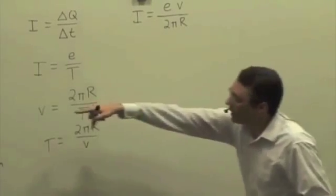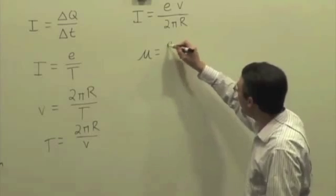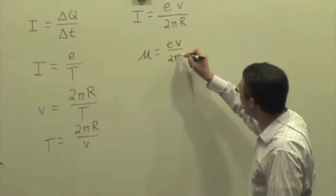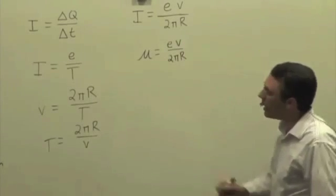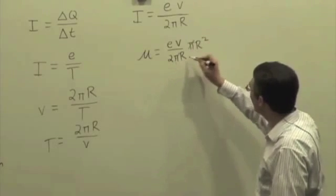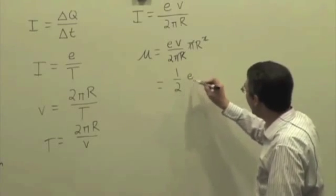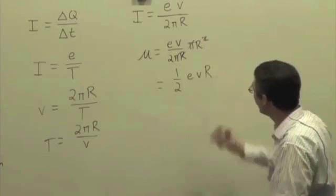And then I can plug that back into our equation for mu. So I have the current, which is E V over 2 pi r. And I have the area, which is pi r squared. So pi's cancel, one factor of r cancels. We're left with one-half E V times r.